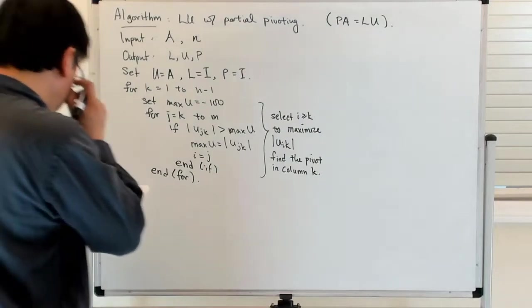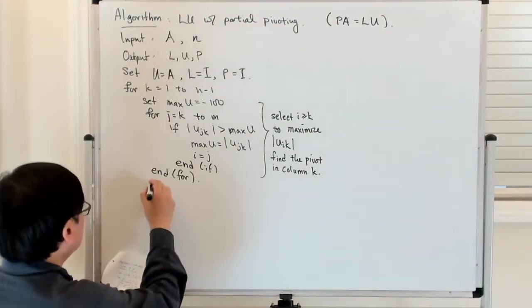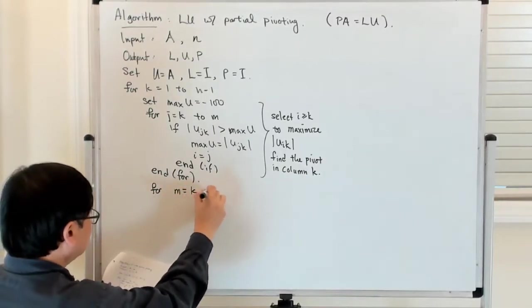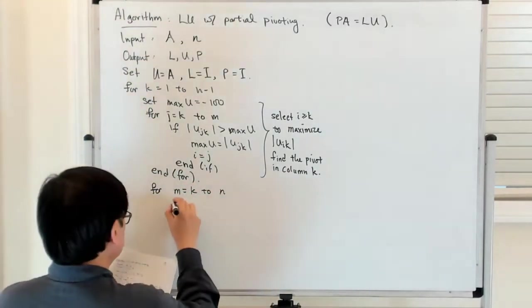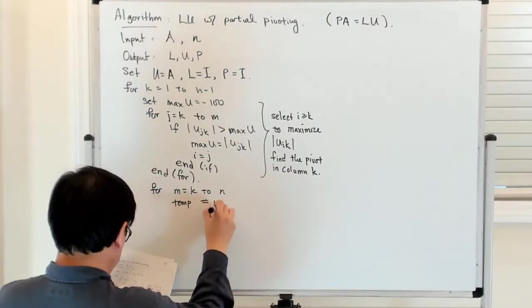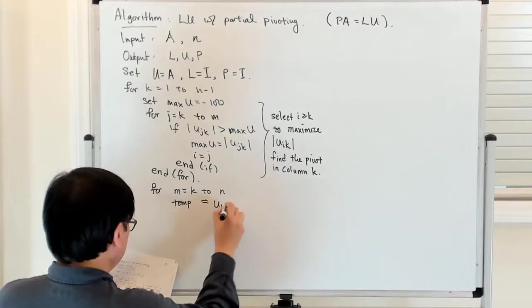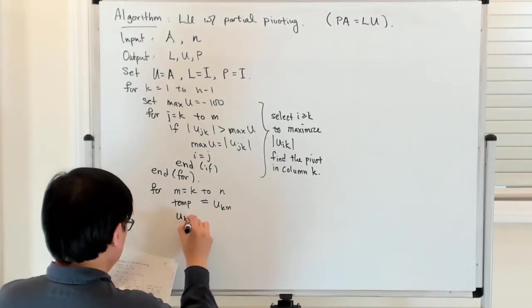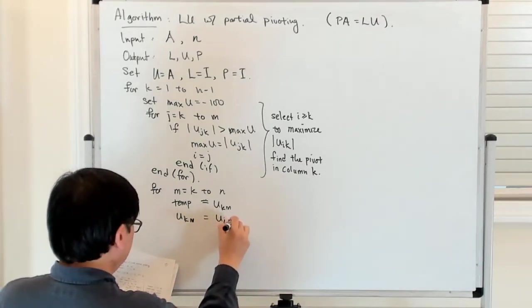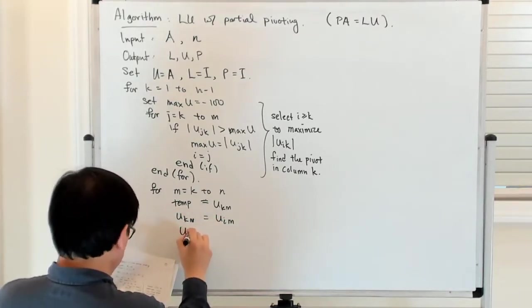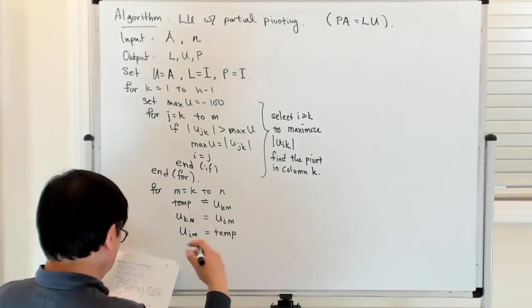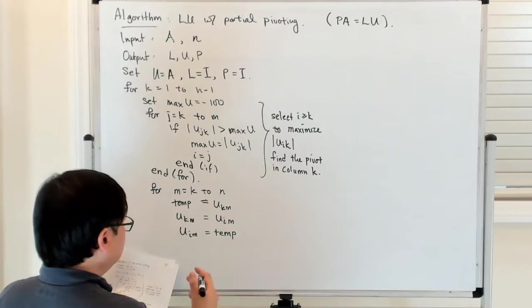And then the next thing is for M equals K to N, I do the following: TEMP equals U(K,M), U(K,M) equals U(I,M), and then U(I,M) equals TEMP. So all I'm doing basically is I'm now swapping the rows in U.